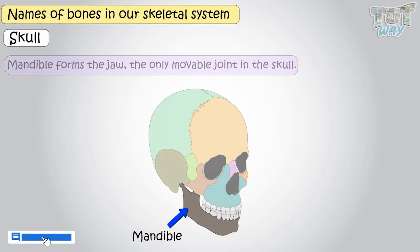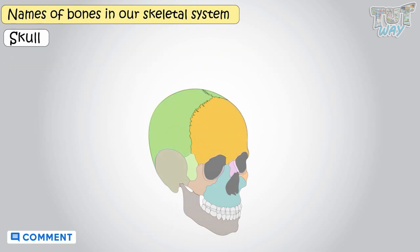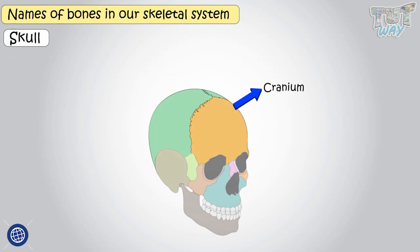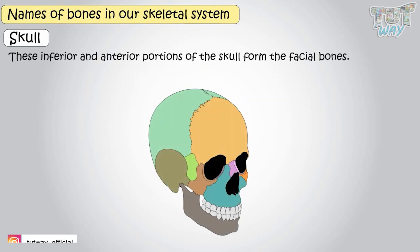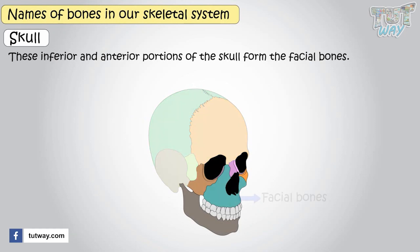The superior portion of the skull is known as the cranium and protects the internal organ — the brain. The inferior and anterior portion of the skull forms the facial bones.